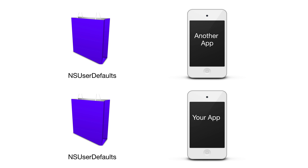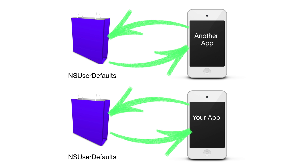We can't read defaults for other users, of course — that's on their phone. And 'database' is kind of a strong word here. It's more like a dictionary that automatically persists for you. I think of NSUserDefaults as an app-specific bag that we throw things into, and we can get them back at a later time.